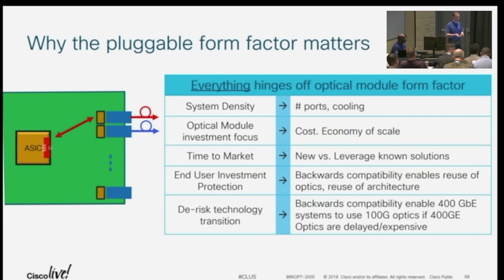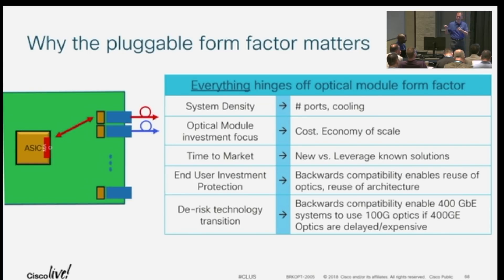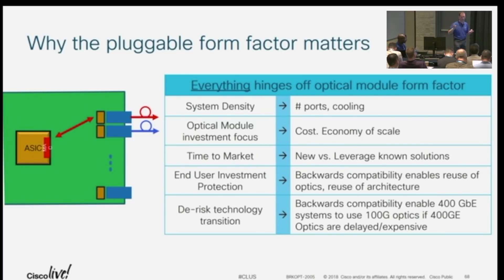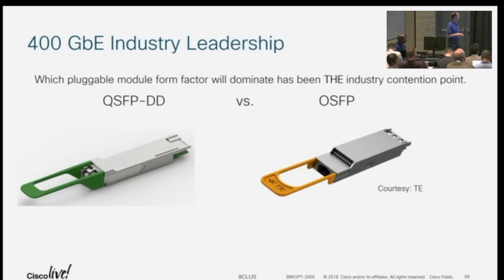When we build our systems, it hinges off what the form factor is — how we place it, how we cool it. It gives us the densities. If everyone uses the same form factor, we get economies of scale and everything is cheaper. Depending on whether you're using a known form factor versus a new one, you get a time-to-market advantage. And if we are reusing topologies and the same port counts, it allows users to just step their networks up in speed without having to re-architect.